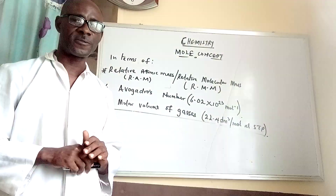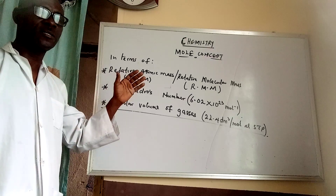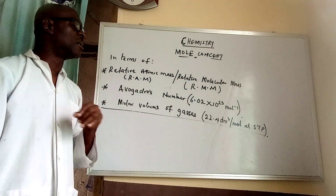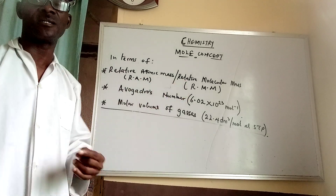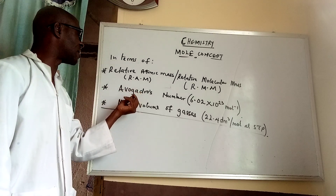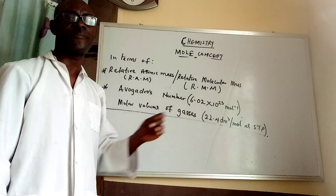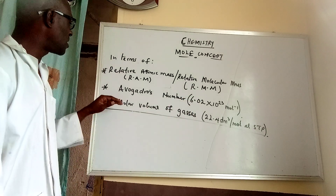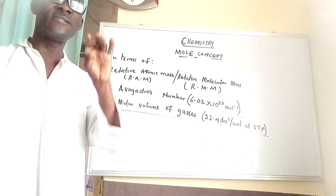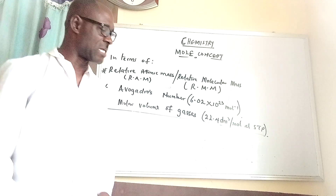More concepts will be discussed under these sections. The first part will be in terms of relative atomic mass or relative molecular mass — relative atomic mass is for the element while relative molecular mass is for the compound. Then we will go on to treat the mole concept under Avogadro's number, which is a constant given as 6.02 times 10 to the 23 per mole of any substance. Lastly, we will discuss the molar volume of gases, that is 22.4 dm³ per mole of any gas at STP — standard temperature and pressure. Now let's go.